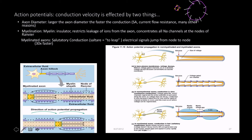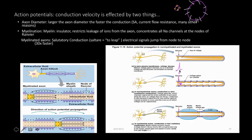There's also myelination. Myelin acts as an insulator, restricting ions from leaking out and concentrating sodium channels at the nodes of Ranvier. In a non-myelinated axon, continuous conduction occurs — every adjacent membrane patch fires one at a time, like running up stairs one step at a time. With myelination, the action potential jumps from node to node — like taking the stairs three steps at a time.